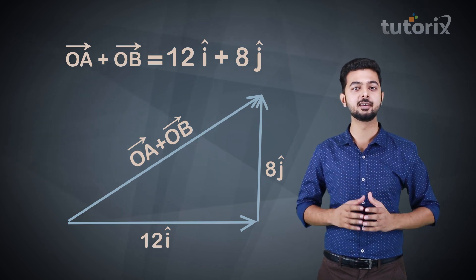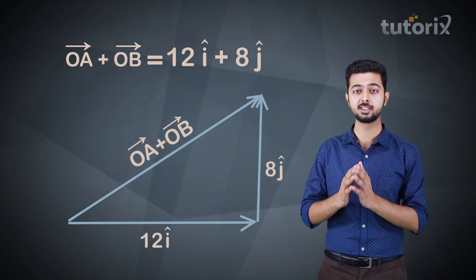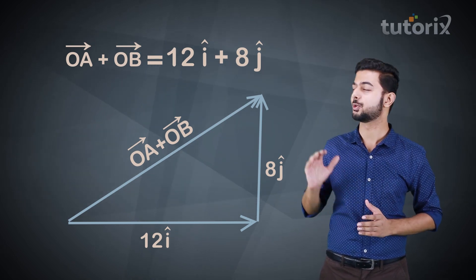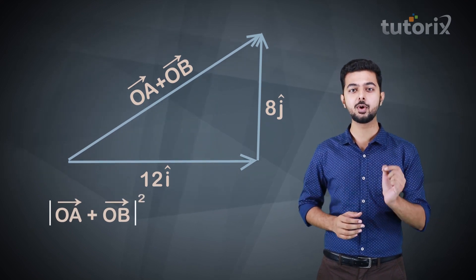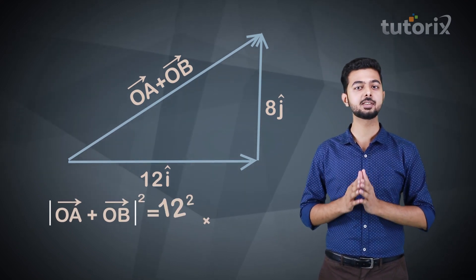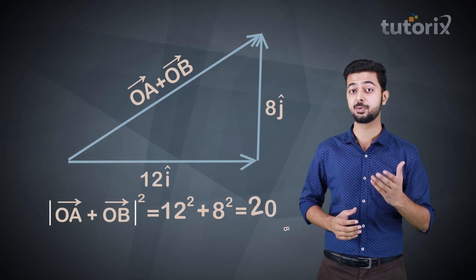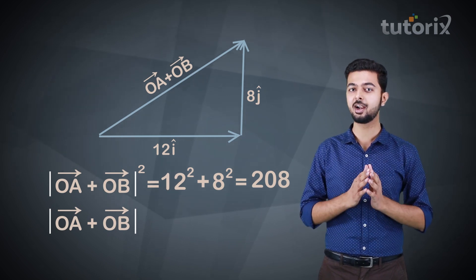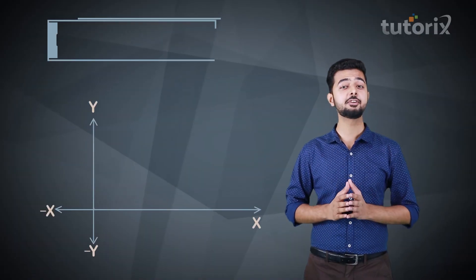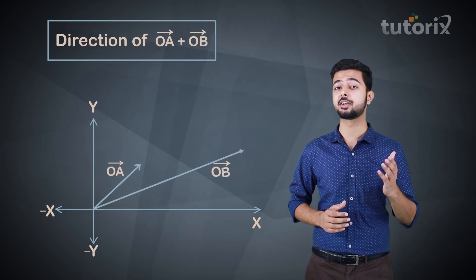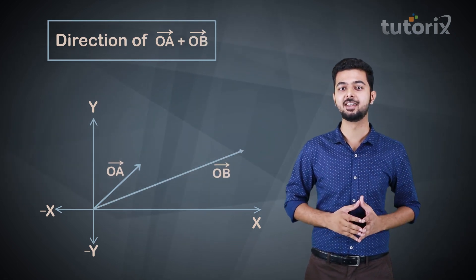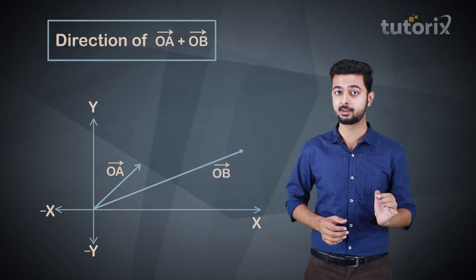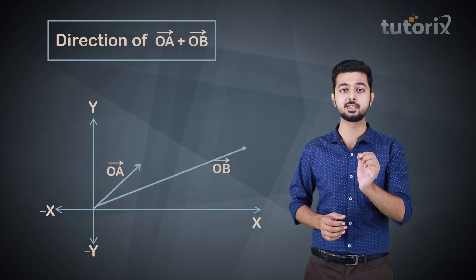Moving further, to find the magnitude of this resultant vector, we apply the Pythagorean theorem. So the magnitude of (OA + OB) squared equals 12² + 8², which is 208. Therefore, the magnitude of the resultant vector equals √208. We can also find its direction by finding the unit vector in the same direction as the resultant.